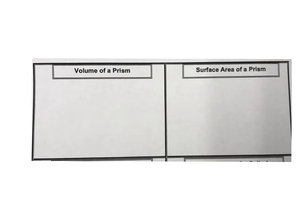Hi everybody. I'm going to give you the notes for solving for the volume of any prism. The examples we're going to look at are how to get the volume and surface area of a rectangular prism and the volume and surface area of a triangular prism. This works for any prism and we're going to talk about why that is the case as well. So let's get started.